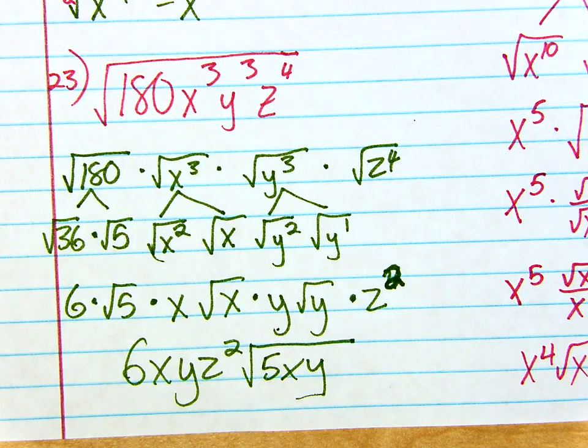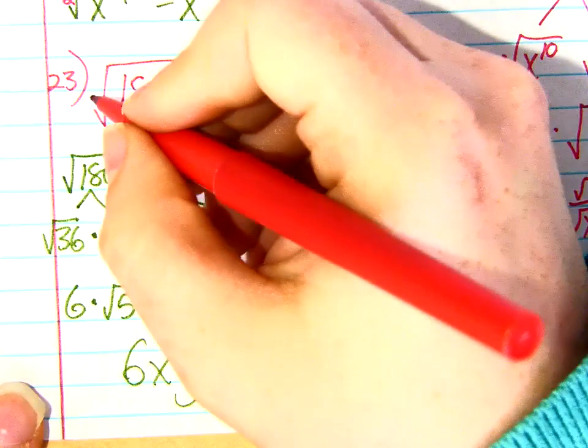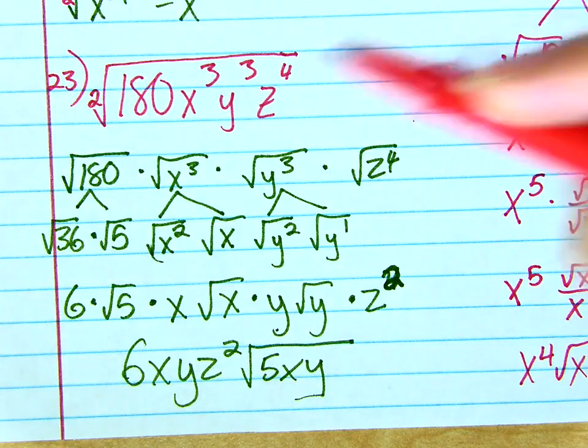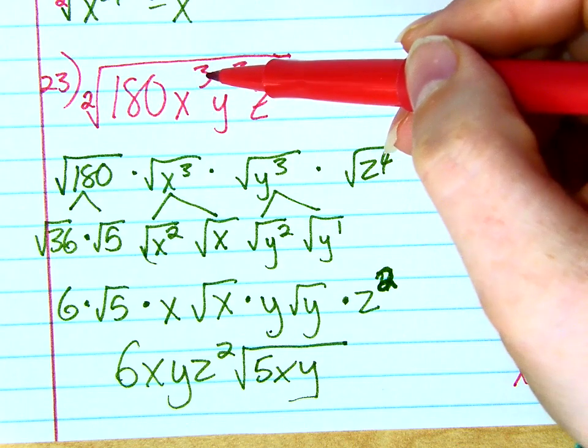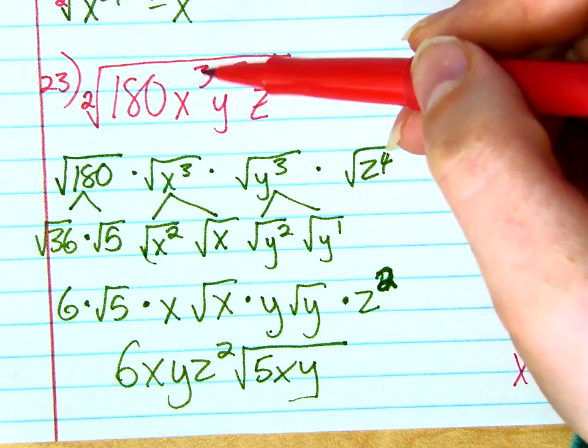Before you move on to the next problem, stop and ask yourself if you need any absolute values. So we're going to go one variable at a time. Remember, there's really a teeny tiny two here. So, even, odd. Do I need absolute values? No, it's only for even, even, odd.